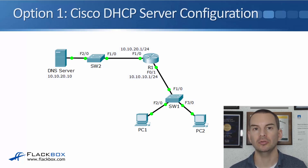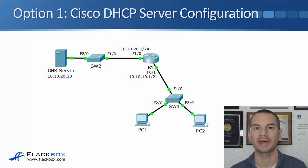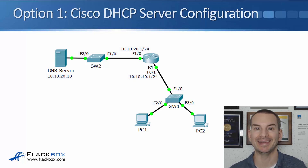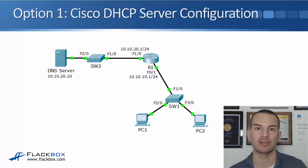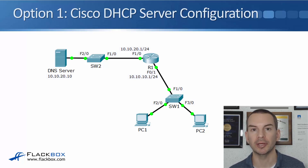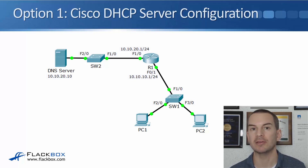If you're going to do this, it's most likely to be a small network, like a branch office, where you don't want to go to the expense of putting in a dedicated server to act as your DHCP server. You're already going to have a Cisco router in that office anyway for doing the routing, so you can also use it as the DHCP server as well, and there's not going to be any additional cost to do that.